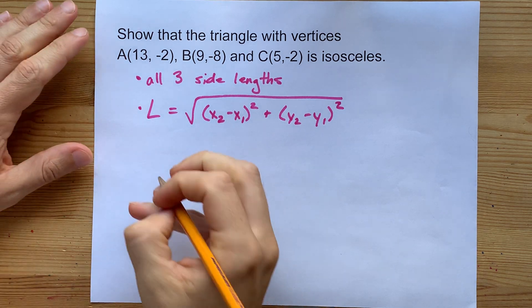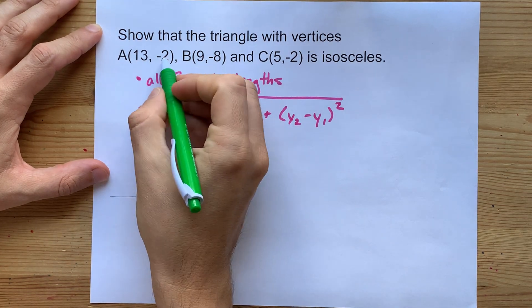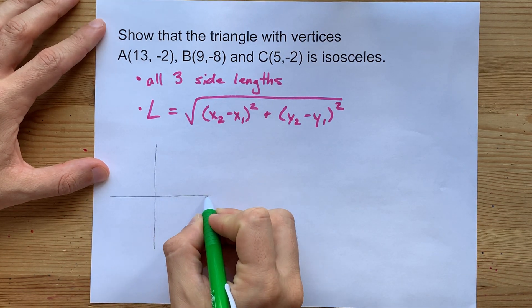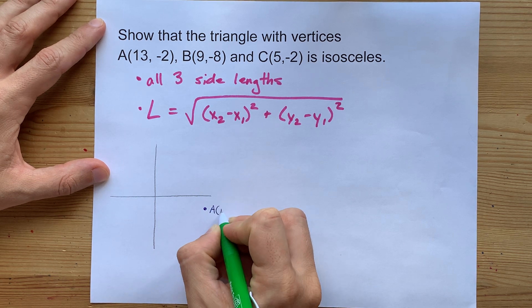Now let's draw a little sketch for ourselves so we can get oriented here. Point A is at (13, -2). Positive 13 on the x, negative 2 on the y. So that is point A.